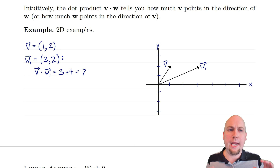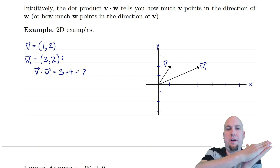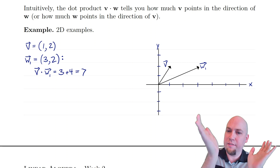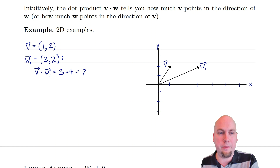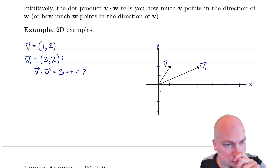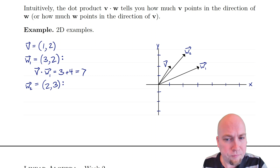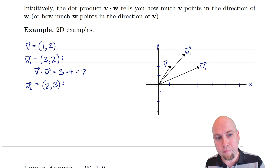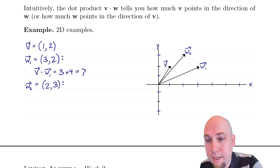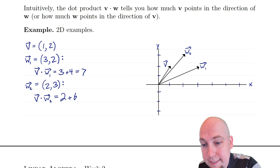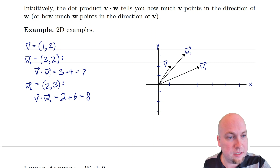The geometric intuition for the dot product is that if vectors are pointing in a similar direction, the dot product is going to be bigger, whereas if they're pointing very far away from each other, it's going to be smaller. To illustrate this, I'm going to take w1 and rotate it closer to v. I'll construct vector w2 with entries [2, 3] — a little closer to v than w1. Computing the dot product: 1 times 2 is 2, plus 2 times 3 is 6, giving 2 plus 6, which is 8. So v dot w2 is 8.